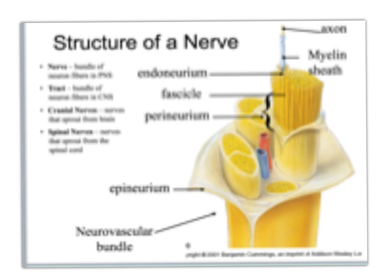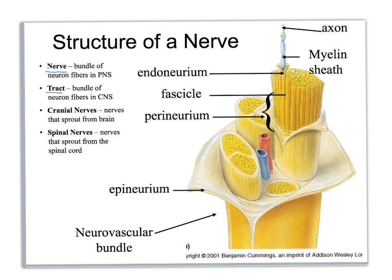Now let's talk about the structure of those nerves. First, key definitions: a nerve versus a tract is basically the same thing, differing only by location. Cranial nerves versus spinal nerves are also the same, except cranial nerves sprout from the brain and spinal nerves sprout from the spinal cord.